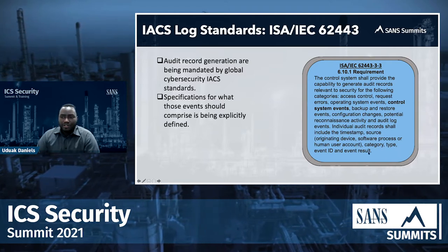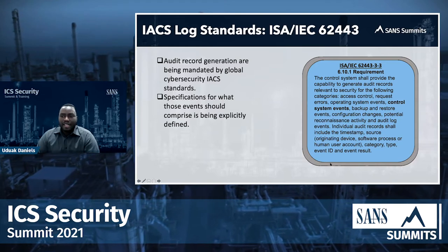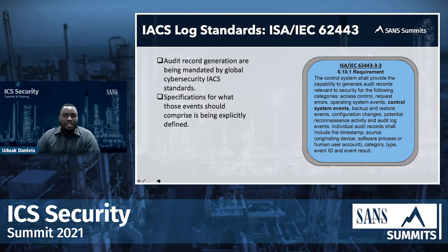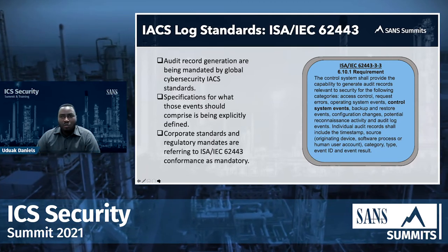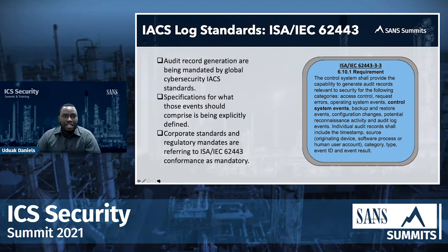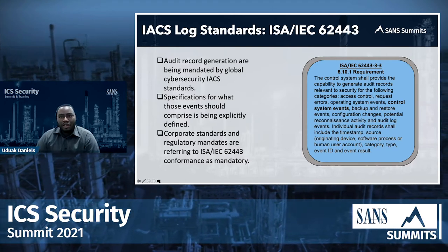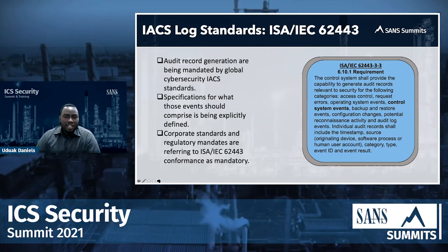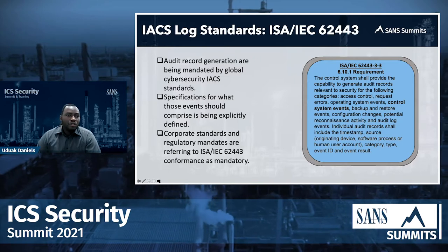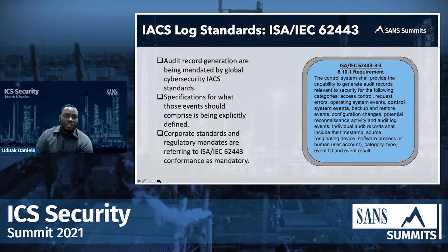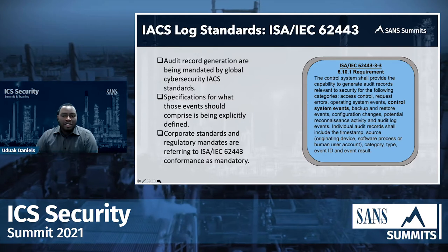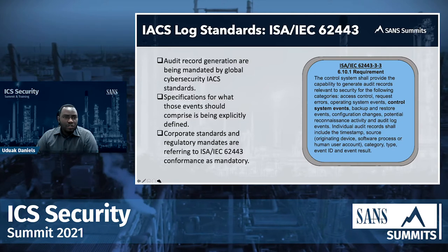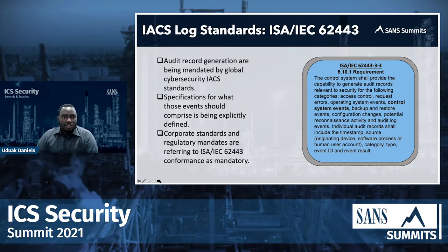Everything is driven by some policy, standard, or procedure. IEC 62443 has a requirement — specifically SR 6.1 — which specifies that control system events have to be included as part of the events considered for a robust security monitoring program. The specification defines category, event types, event results, and originating device. Corporate standards and regulatory mandates reference 62443 as the standard for industrial automation and control systems.